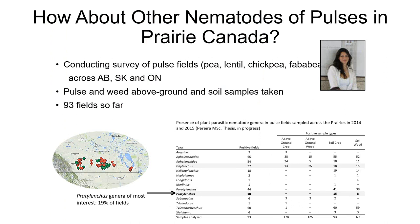How about other nematodes of pulse crops on the prairies? With the pulse growers, we've been conducting surveys of pulse fields — pea, lentil, chickpea, faba — across Alberta, Saskatchewan, and Ontario, looking for that Ditylenchus stem and bulb nematode, but also trying to see if there are any other nematode issues. We've sampled many fields and crops for nematodes, as well as weeds in those fields. One nematode that pops up as fairly prevalent is Pratylenchus — present in 19% of all commercial fields we sampled. We wanted to find out what this nematode is.